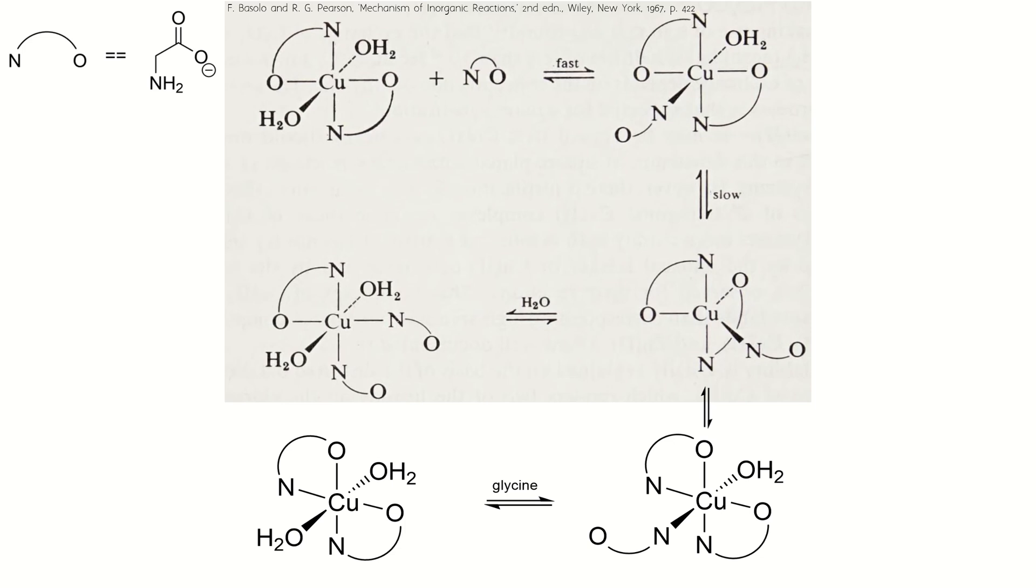So in the first step, a water molecule from the distorted z-axis is exchanged for the amino group of a glycine. This still octahedral complex loses a weakly bound water molecule again and forms the trigonal bipyramidal species in the middle right.